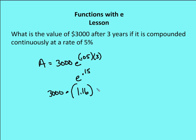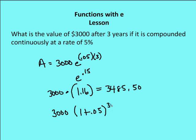Keep the full value in your calculator without rounding, then multiply by 3,000 to get $3,485.50 — so you've made about $485.50 on $3,000 over 3 years at 5%. For comparison, the yearly compound interest model is 3,000 × (1 + 0.05)^3. We get 1.05 cubed ≈ 1.157, multiplied by 3,000 gives $3,472.88. The difference is about $13. For short periods and small sums the difference is small, but larger sums over longer periods show a much larger difference.